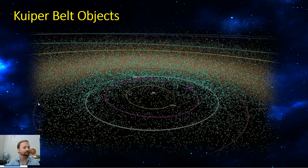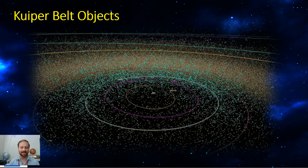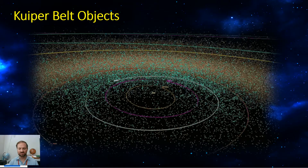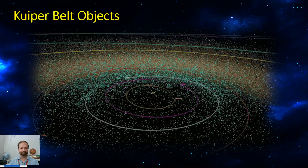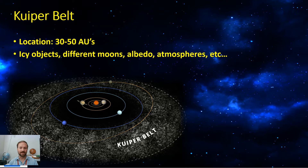Kuiper Belt objects, or KBOs as they're called, are pretty numerous as you can see by this computer scan of objects theorized and confirmed to be out there, making their way around the sun. The sun's gravity holds more than just the planets — it holds all these comets and icy objects like Pluto and all his friends in their own orbits. Where they are is 30 to 50 AUs away. From that distance, the sun itself just appears as a very bright star — the brightest of all the stars — but no longer does it appear as the round disk we see every day. The further away you get, it vanishes down to one very bright, intense point of light. But its gravity, even at that distance, is still pretty strong — they still feel it.